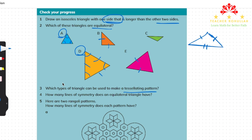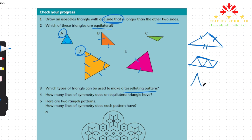For example, if we have an equilateral triangle, we can make a tessellating pattern by placing it and continuing to put it the same way. Whatever way we continue, it will make a tessellating pattern and there will not be any gaps between the triangles.